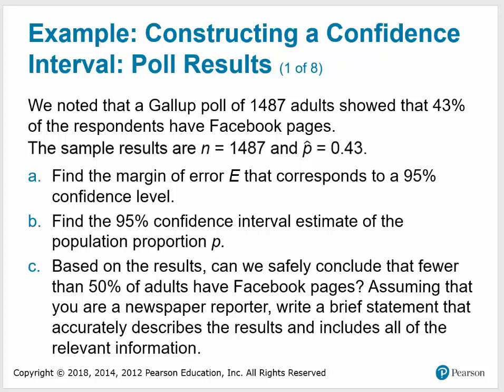A Gallup poll of 1,487 adults showed that 43% of the respondents have Facebook pages. The sample results are N = 1,487 and P-hat = 0.43. We want to find the margin of error that corresponds to a 95% confidence level, find the 95% confidence interval estimate of the population proportion P, and then answer whether we can safely conclude that fewer than 50% of adults have Facebook pages. Assume you're a newspaper reporter writing a brief statement that accurately describes the results and includes all relevant information.